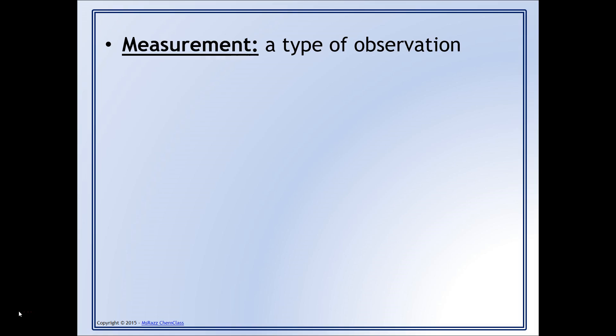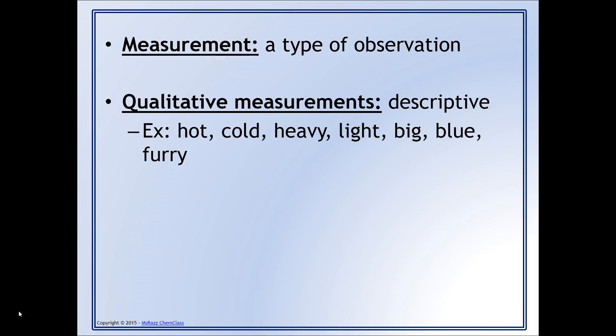Measurements, as you might expect, are a type of observation. There are two types. The first type is qualitative. These are descriptive. For example, if something is hot, cold, heavy, light, big, blue, or furry, these are all examples of qualitative measurements because they don't include any numbers.